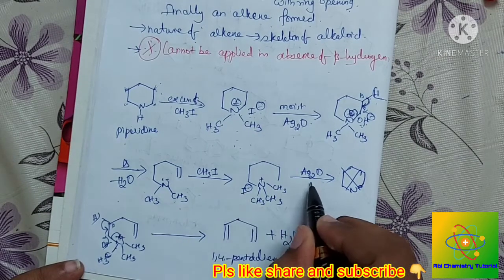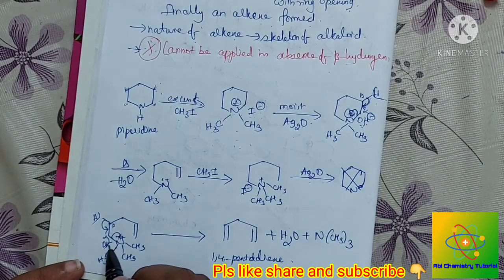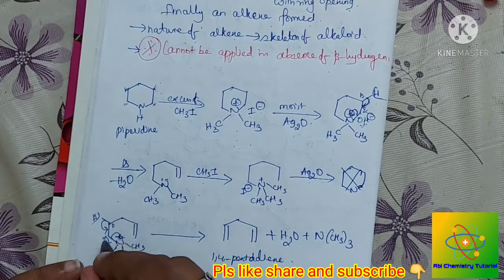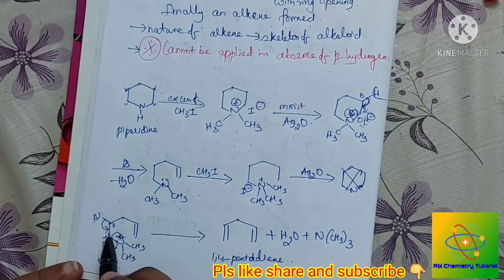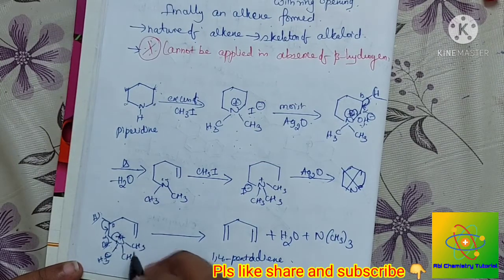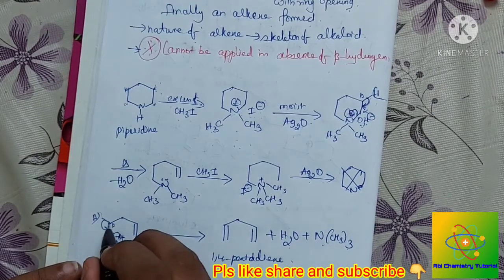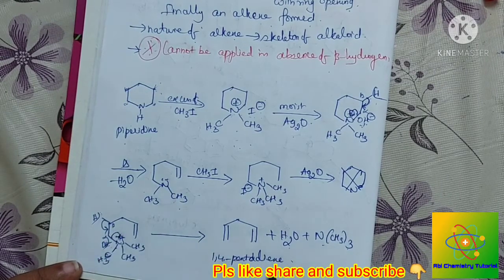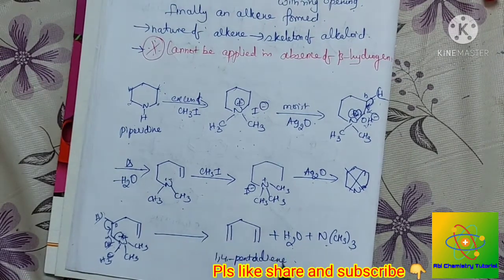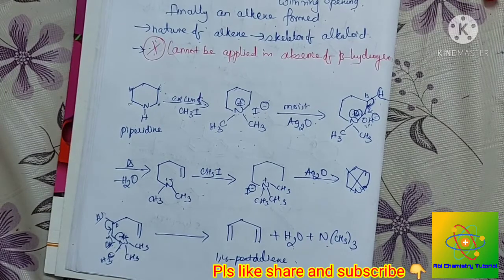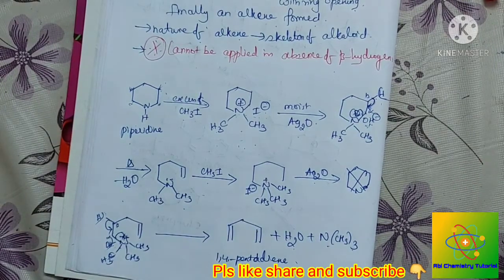The product is NCH3 groups, and a water molecule is eliminated along with the formation of a double bond. From this, 1,4-pentadiene is obtained. This is the alkene basis — the alkene nature — and from this we can identify the alkene skeleton. This is the Hofmann Exhaustive Methylation Method.